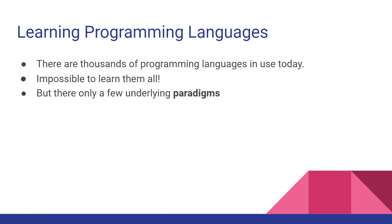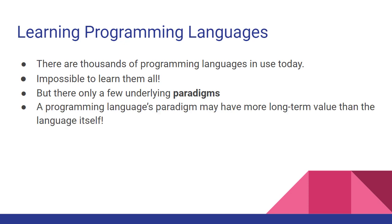If you know one paradigm, you can usually pick up another language using that same paradigm pretty rapidly. For example, if you know C++, Java, or C#, you can pick up the other languages much more quickly than starting from scratch. And sometimes a language's paradigm has more long-term value than the language itself — whenever a language introduces a clever new feature or paradigm, that often gets applied to existing languages, even if the original language never goes anywhere.